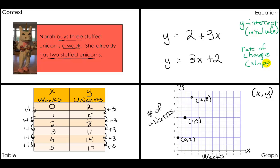In our context, the y-intercept, our initial value, shows up right here. Nora has two stuffed unicorns, so our beginning, the initial value we're starting with, is 2. This is our y-intercept.